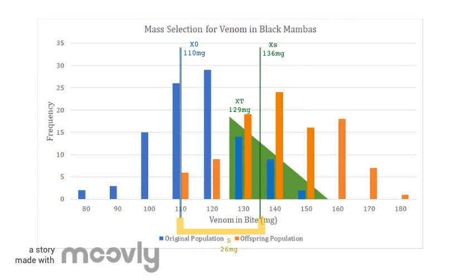We can now combine this data with that of our initial population in this slightly larger histogram. The mean of this offspring population is represented here by the label X1, and is around 128 milligrams. Marking that now allows me to identify the response to selection, represented here by the red bar labeled by an R.